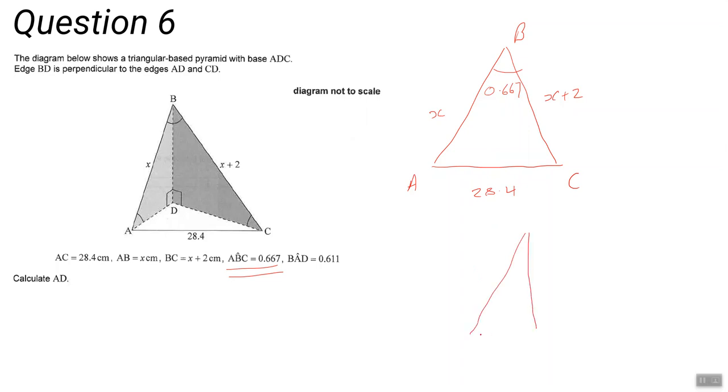And the second stage is then to use the triangle ABD, which is right-angled at D. So we've got that triangle there. We know that this is x, which we've just calculated, and we're told in the question that the angle BAD is 0.611.